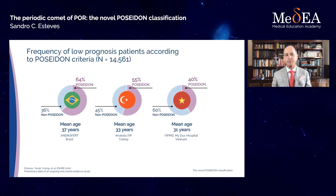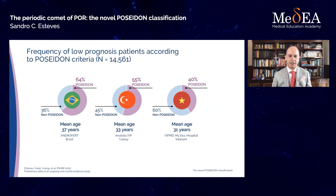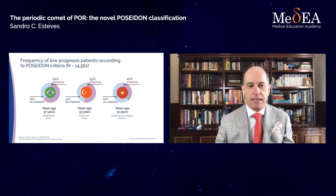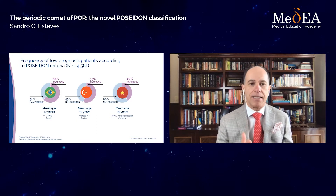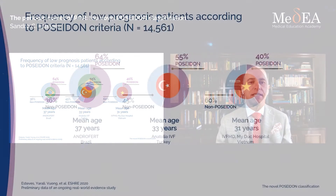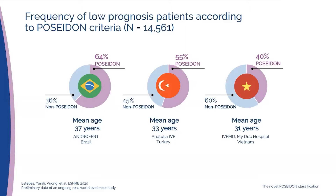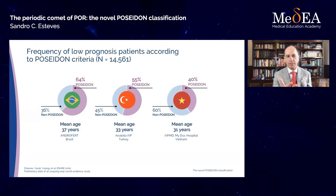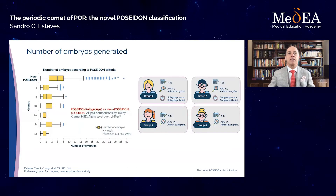Now I will share real-world evidence validating the Poseidon criteria. We are conducting a study using more than 14,000 patients from centers in Brazil — Androfert — Turkey — Anatolia IVF with Professor Hakani Aral — and Vietnam with Professor Leng Wang. We explored the prevalence of Poseidon patients in clinical practice: 65% of our patients fit the Poseidon criteria, compared to 40% in Vietnam and 55% in Turkey. The older the average age of the population treated, the higher the prevalence of Poseidon patients.